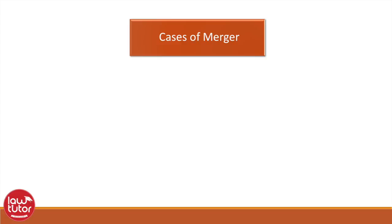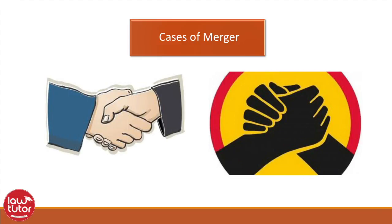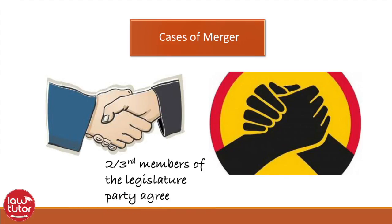Cases of merger. When two political parties merge, the original membership changes from one political party to another. The membership of the MPs and MLAs who belong to those political parties will also change. These members are not defectors if not less than two-thirds of members of the legislature party agree to the merger.